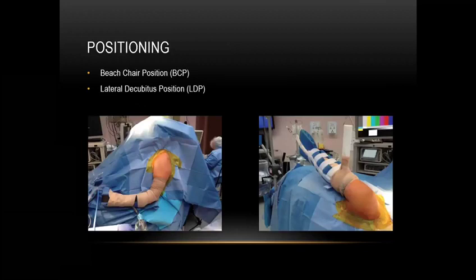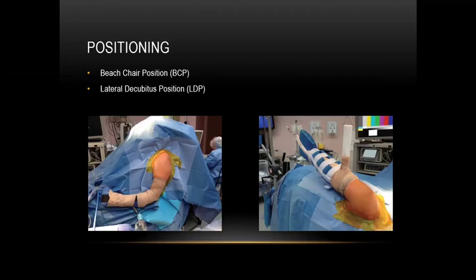In terms of positioning, we have two types for shoulder arthroscopy. First is beach chair position and second is lateral decubitus position. For beach chair positioning, the patient must be positioned properly. The head must be well padded, the neck stabilized, and the anesthesia team must be comfortable with the active positioning. There must be a pillow under the knee flexed at 30 degrees. The posterior plate of the arm must be removed for free access, and the hand must be draped and able to move freely — either on a hand stand or a gravity table.